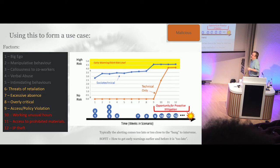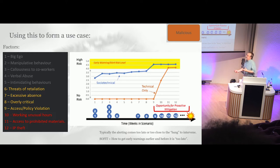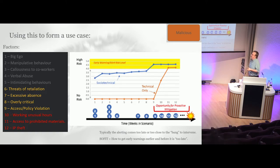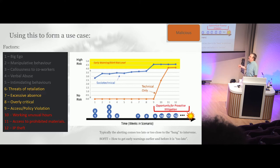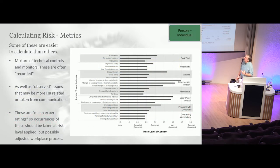Excessive absences, which may mean they've just stopped caring, or becoming overly critical — the kind of people who can never be made happy no matter what you give them. These behaviors then turn into the beginnings of technical indicators: access or policy violations, working unusual hours, access to prohibited materials, then IP theft. What SOFIT is attempting to do is give you a heads-up in the months beforehand, based on non-technical elements, to say this person might not be headed in the right direction.